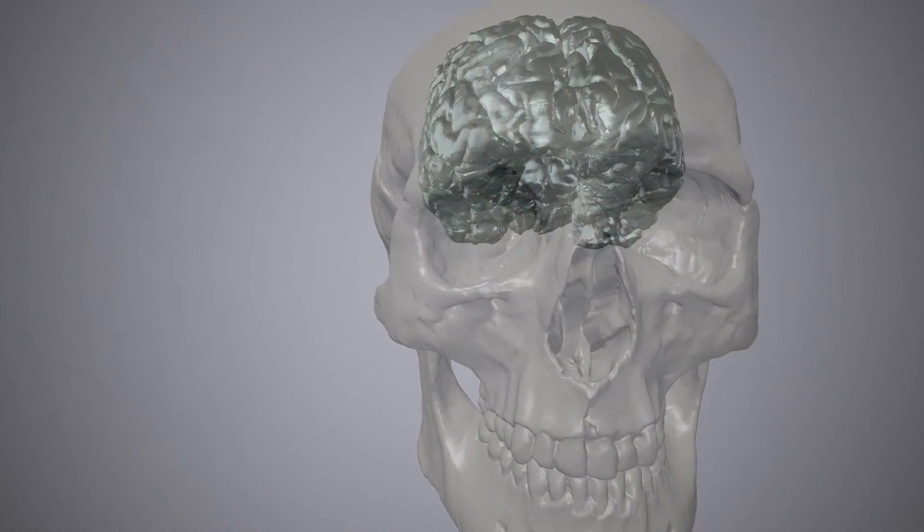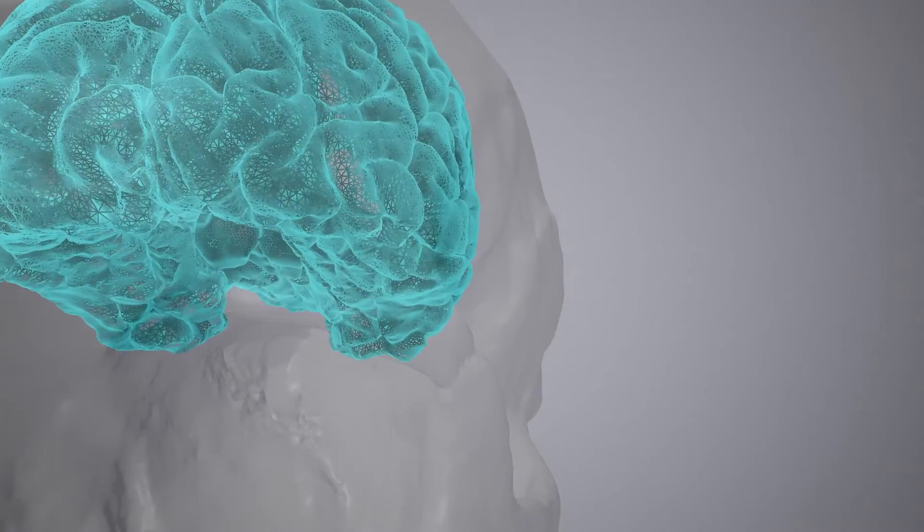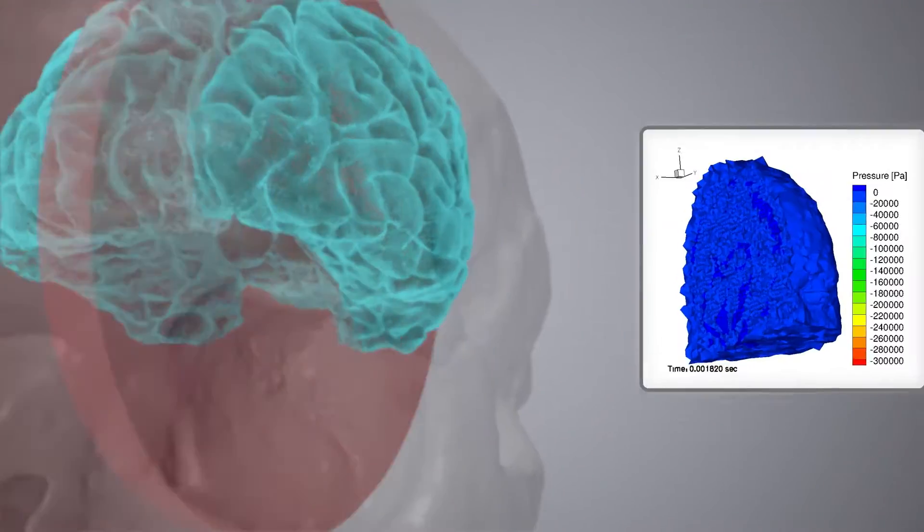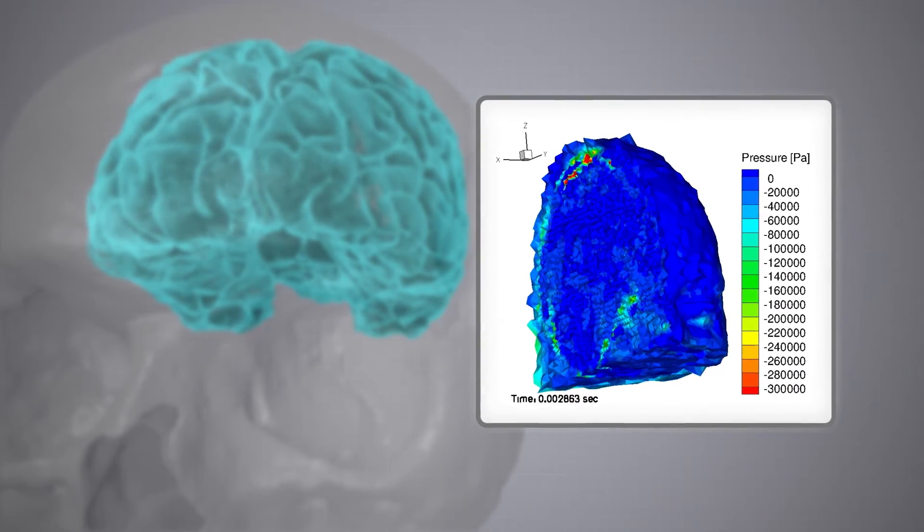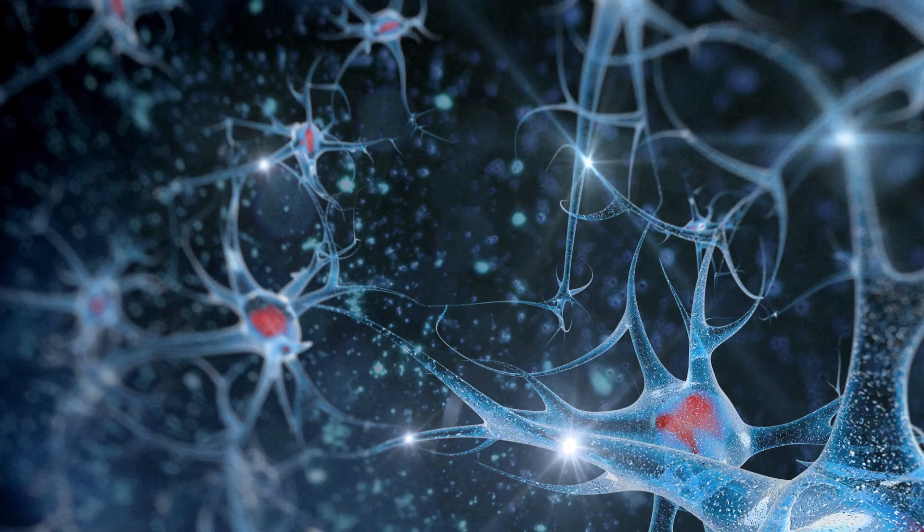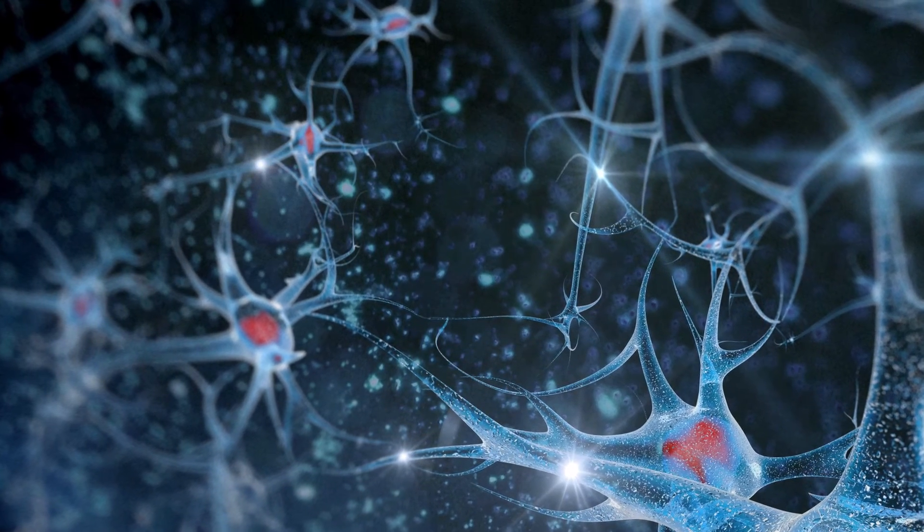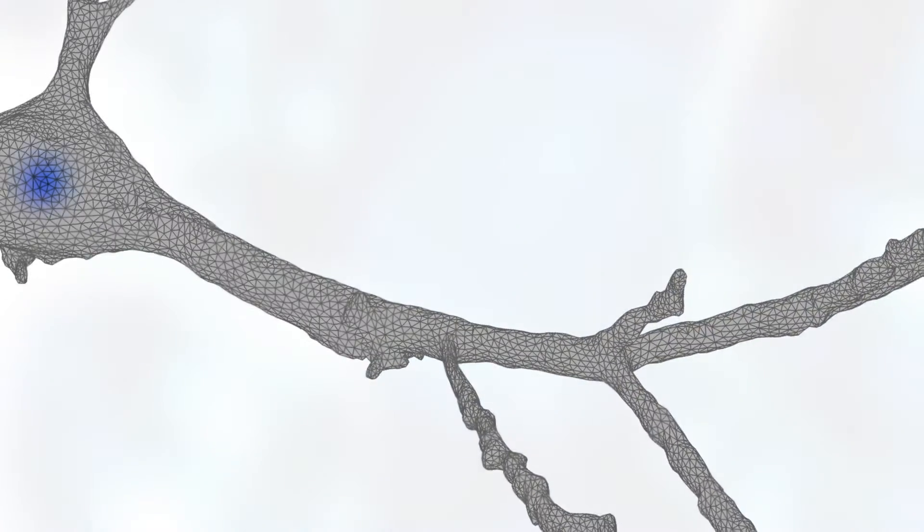Computational techniques are commonly used to model the brain as a whole and to help us understand how forces deform the tissue at a large scale. What is more challenging is to scale down this understanding as we zoom in, looking at how individual neurons are deformed by those same forces.